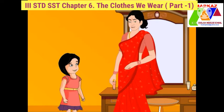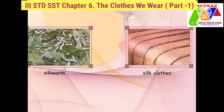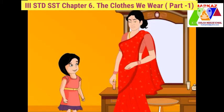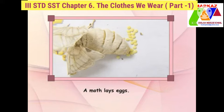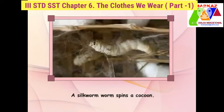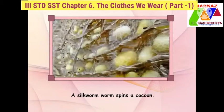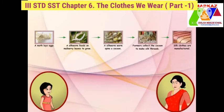This saree is made of silk. Do you know how we get silk? We get silk from silk worms. A silk worm is born out of eggs hatched by a moth. A silk worm is a small caterpillar which feeds on mulberry leaves. It then starts spinning a cocoon of silk threads around itself. The cocoon is then collected by farmers who separate the silk threads and weave them into clothes.